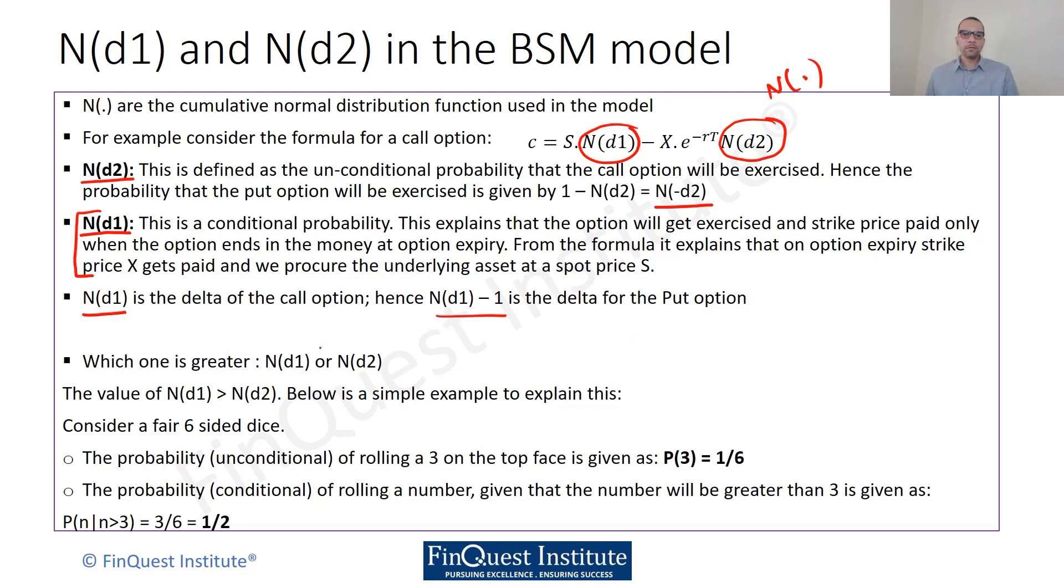Another quick question which can come up in interviews is which one of N(d1) and N(d2) do you expect will be higher? The value of N(d1) will be expected to be higher than N(d2). We can see that through a simple example. Let's take a fair die, a fair 6-sided die.